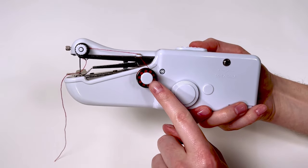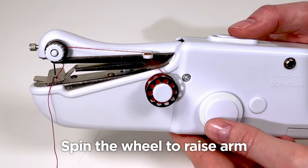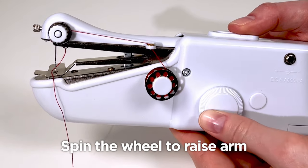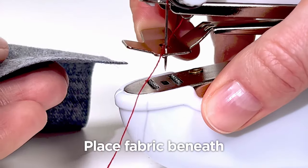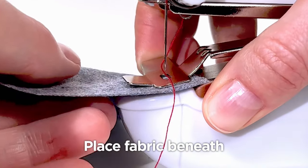Now that your magic stitch has been threaded, here's how you use it. Using the wheel on the side of your magic stitch, place your needle in its highest position. Using one hand, simply raise the fastening plate and place your fabric underneath, then lower the plate.